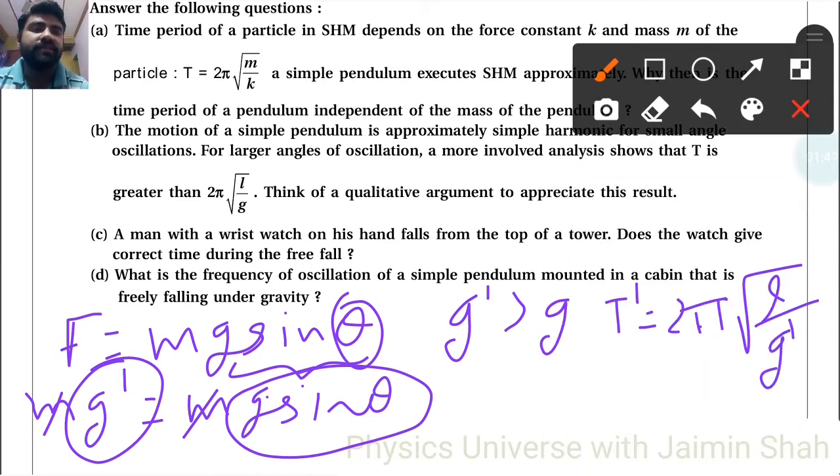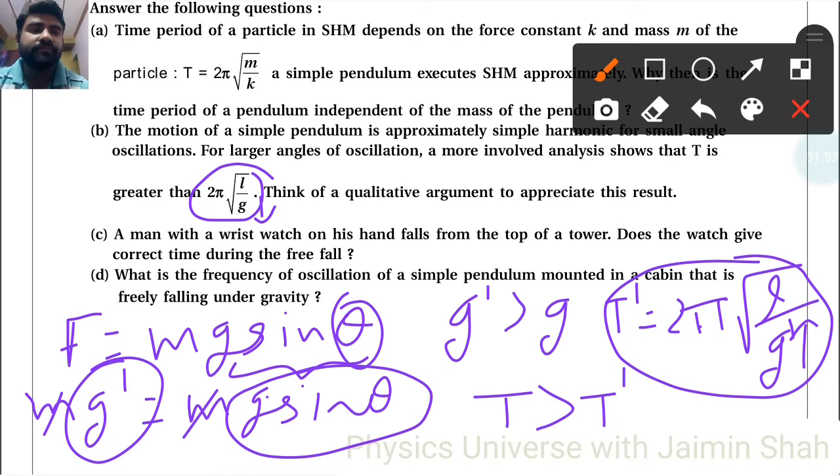L upon g', right. So our T is here and T' is here. If g' is more and g is less, then T is more than T'. They are reciprocal of the acceleration, so that's why T is greater than 2π√(l/g). Here T they told about this one, 2π√(l/g), and the other particular time period is T'.